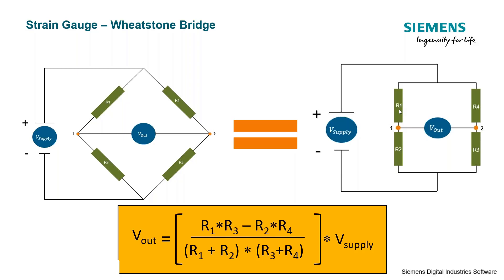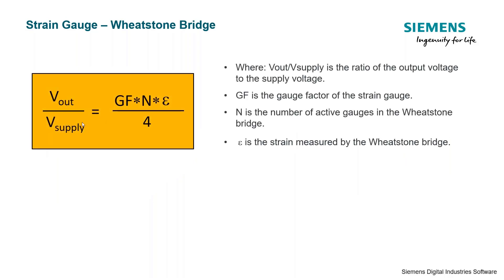If we replace one resistor with a strain gauge that initially has the same resistance, the output still reads zero when no load is applied. But as soon as the strain gauge deforms, its resistance changes slightly, the bridge is no longer balanced, and we get an output voltage across points one and two. Using the gauge factor formula and some additional math, we can derive a relationship between the ratio of output voltage to supply voltage and the strain measured by the gauge.